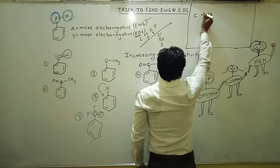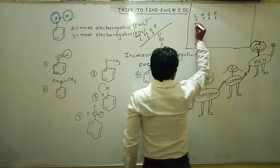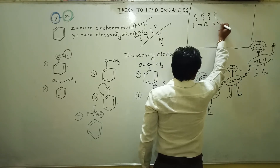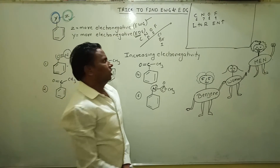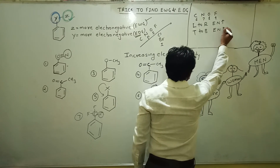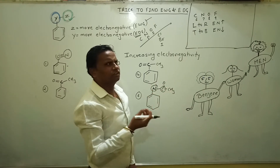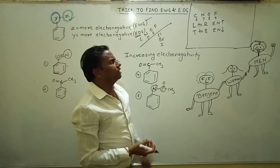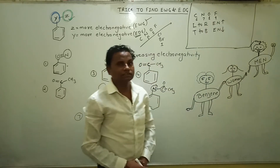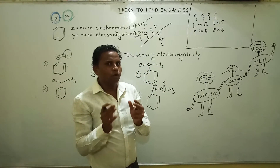Carbon, nitrogen, oxygen, fluorine — atomic numbers 6, 7, 8, 9. Moving left to right, electronegativity increases. Moving top to bottom, electronegativity decreases. The simple reason is that atomic size goes on decreasing, and that's why electronegativity goes on increasing.